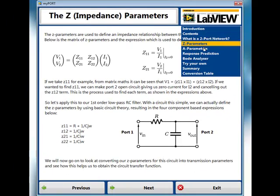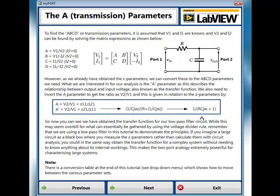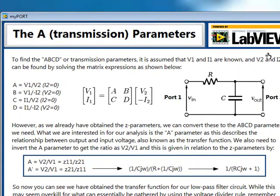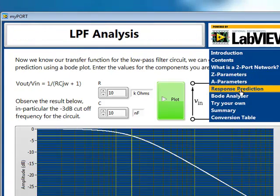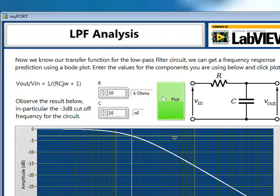So we work through these different stages. We move on to something called transmission parameters to actually obtain the transfer function for the circuit, the voltage transfer function. And then once we've got this transfer function, we use that to predict its response.